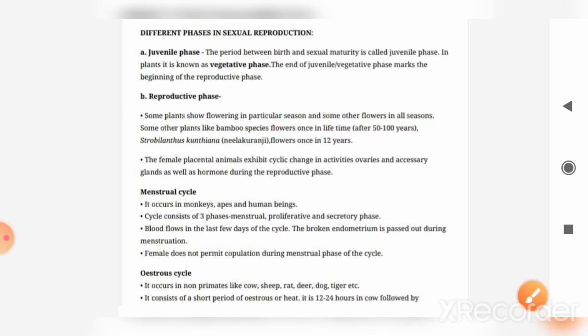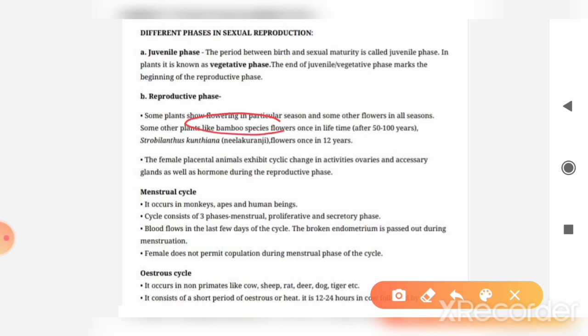For example, bamboo species flower only once in their lifetime. And the plant Strobilanthus flowers once in 12 years — it shows flowering after every 12 years.